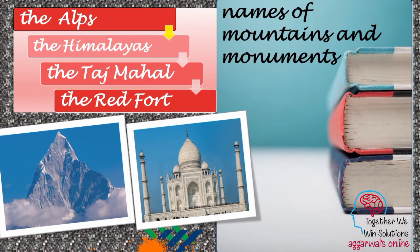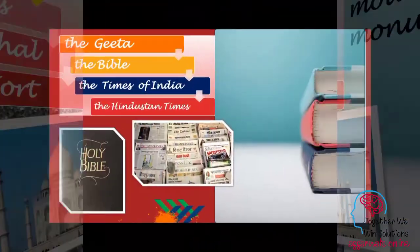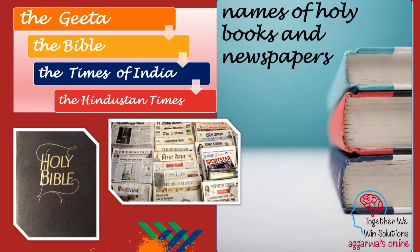Article 'the' is used before names of mountains and monuments. 'The Himalayas', 'the Red Fort', and 'the Taj Mahal' are a few examples. As you can see in the pictures, article 'the' is also used before the names of holy books and newspapers.